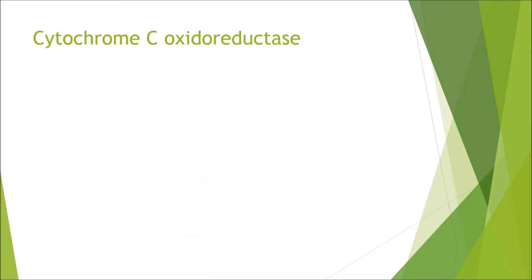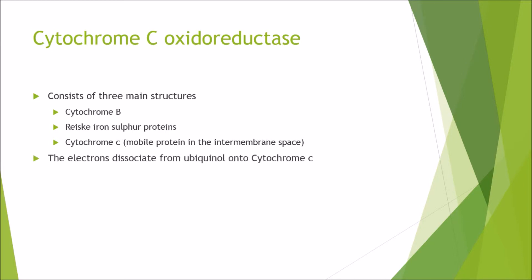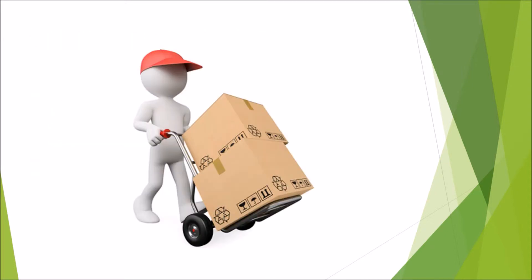Cytochrome C oxidoreductase consists of three main structures: cytochrome B, the Rieske iron-sulfur proteins, and cytochrome C, which is a mobile protein which means it can move along the intermembrane space. The electrons dissociate from ubiquinol onto cytochrome C. In doing so, 4 hydrogen ions are then pumped into the intermembrane space. Cytochrome C will then travel towards complex 4. You can think of it as like a parcel delivery man. It's been delivered these parcels, and it's now going on to the next step.